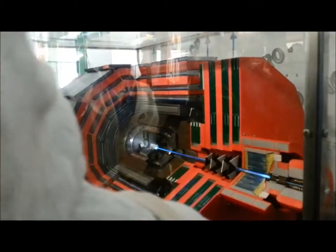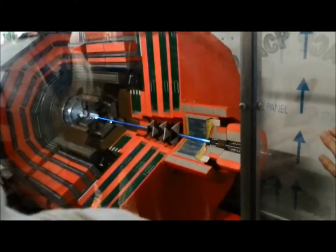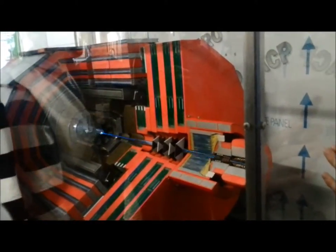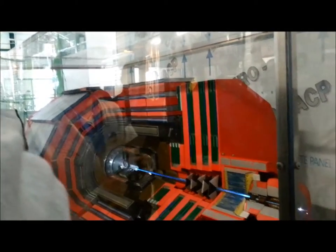The first detector close to the beam pipe is the pixel detector, that is missing there on the model. The pixel detector has about 65 million channels in an area of about one square meter. Of course, it is not a single layer with one square meter. We have three layers, the barrels, around the point of collision.